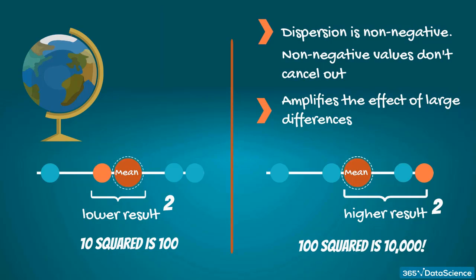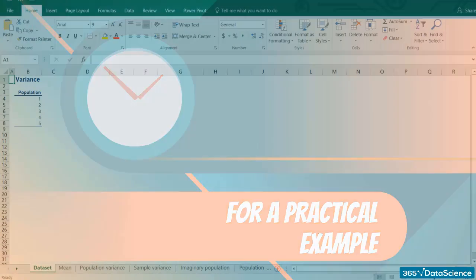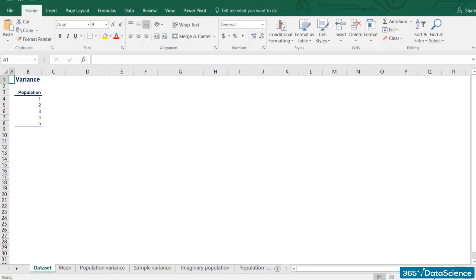Alright, enough dry theory. It is time for a practical example. We have a population of five observations: 1, 2, 3, 4, and 5.